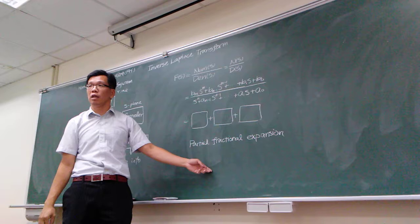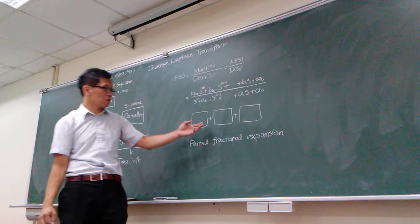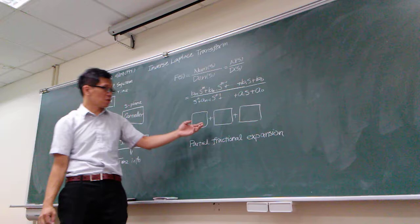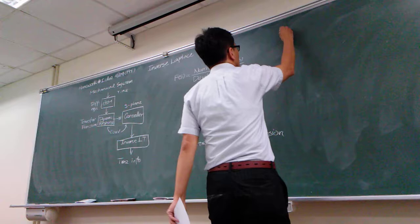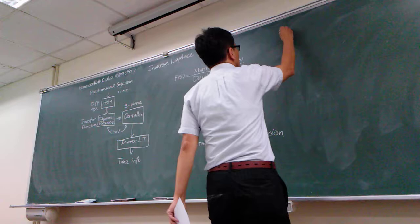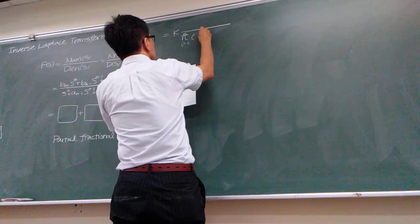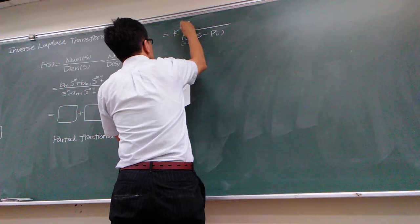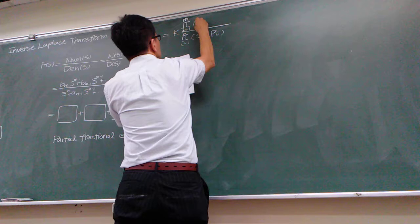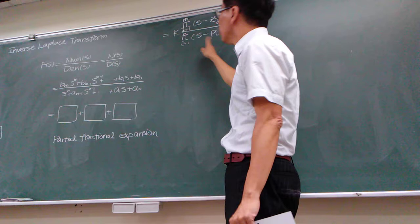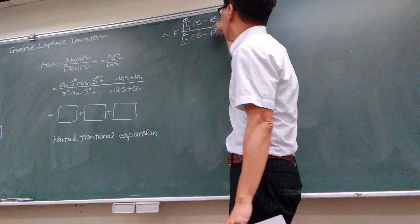You learned this when you were taking calculus one — you should know this already. If you have a large polynomial combination, you need to use a lot of smaller fraction representations to represent it. So you're going to find it's going to be a lot of combinations of first-order expansions. That is something we're going to do.